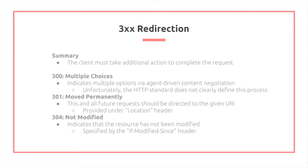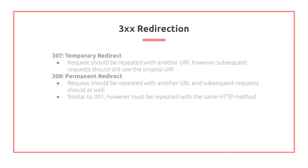301 refers to moved permanently. It means that all subsequent requests must follow the given URI, and this is provided under the location header as part of the HTTP response. 304 is referred to as not modified — if you have a cache and you pass as part of your request 'if modified since', your router would return 304, meaning you can use your cached version instead locally. 307 refers to temporary redirect, which means that the request should be repeated with another URI, but subsequent requests should still attempt the original URI.